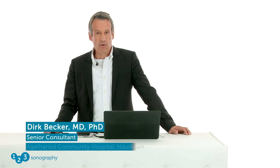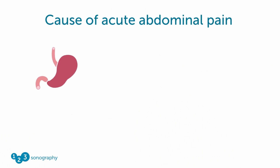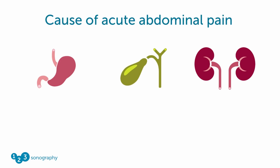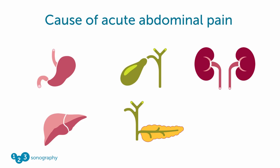Today, in our lecture, we would like to cover some possible reasons for abdominal pain. It can come from the stomach, from the biliary system, from the kidneys, from the liver, from the pancreas. And there also might be a reason that the abdominal pain is caused by a progressive disease coming from the big vessels inside the stomach, the aorta.